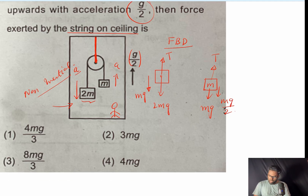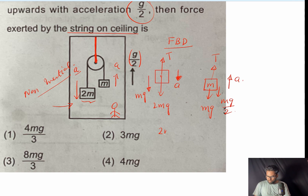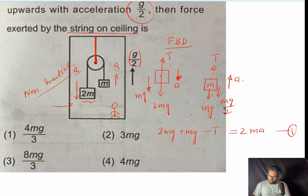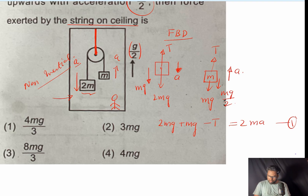Now let's write Newton's equation of motion. For block 2m going downward: 2mg plus mg minus tension T equals 2m·a. This is equation number one.